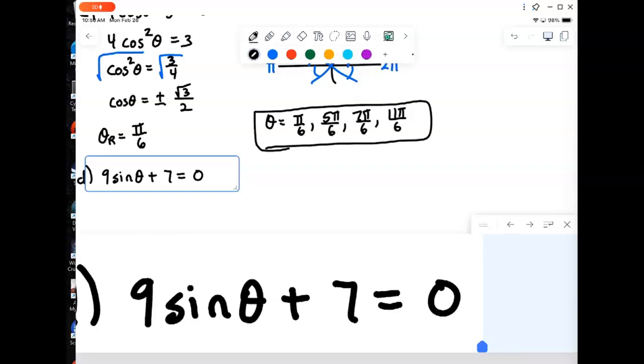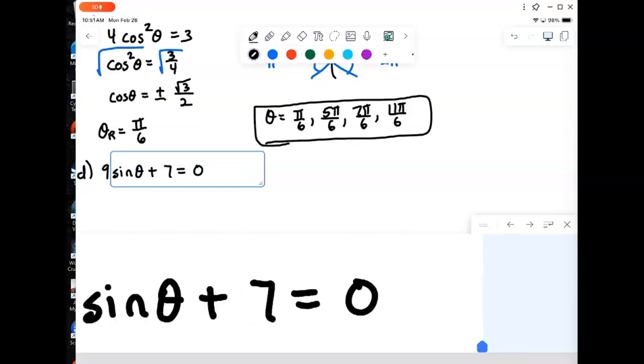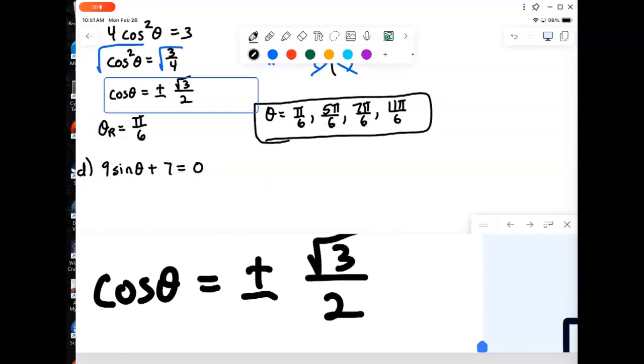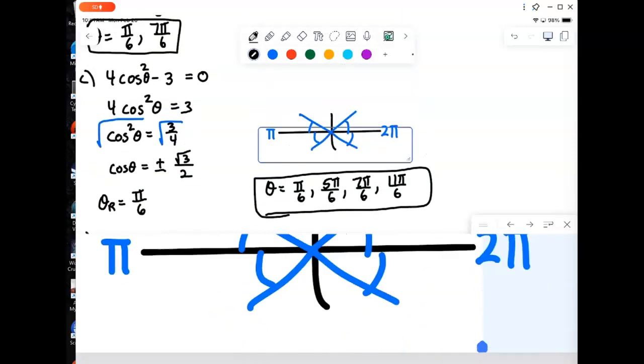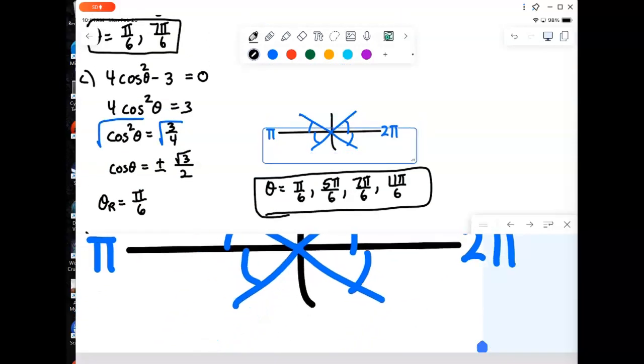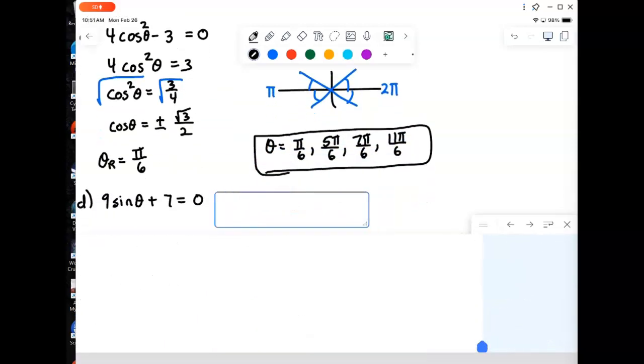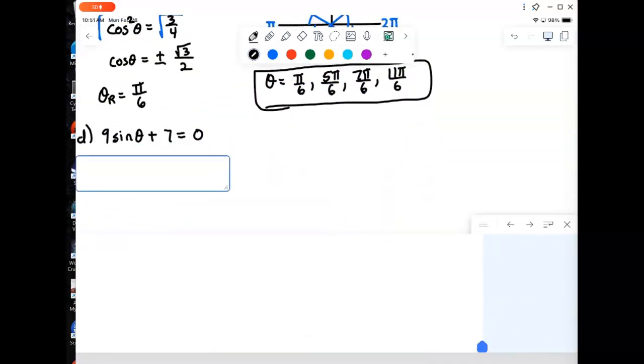So with non-exact values, we will have to involve our calculator a little bit. But the calculator doesn't preclude the ideas that we've already been using, this idea of reference angles. These things are still important. Finding the angle using the reference angle, because the calculator is not going to take away from that. We're still going to have to deal with that.